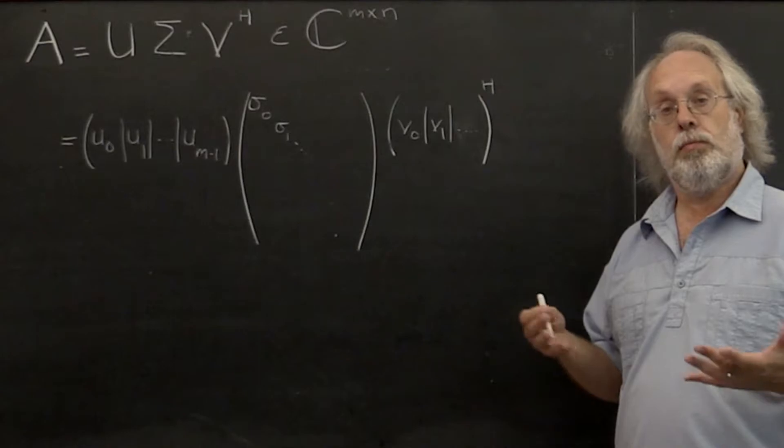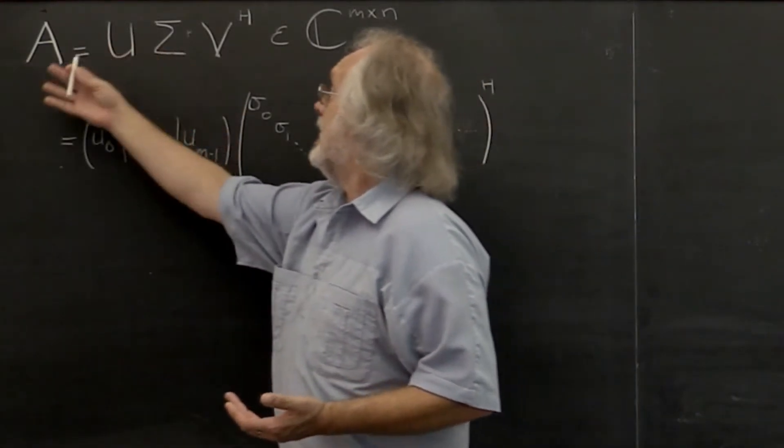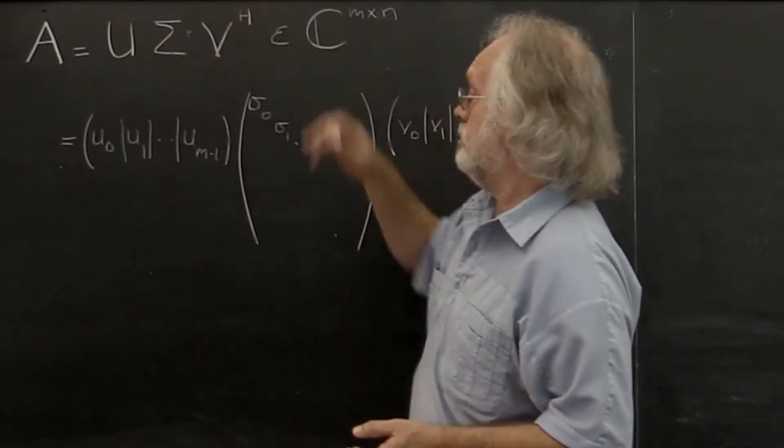So far we've been dealing with matrices in the abstract. A matrix A that's M by N can be written as U times sigma times V Hermitian transpose.